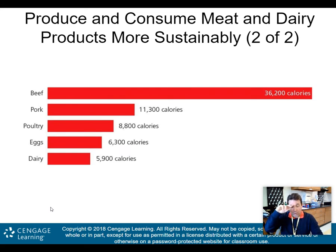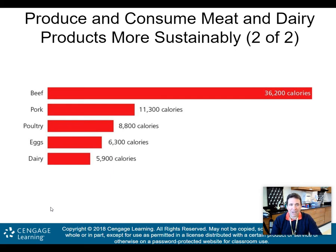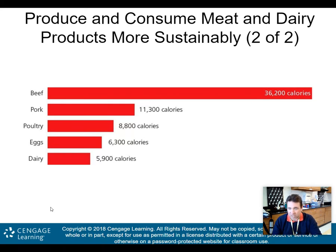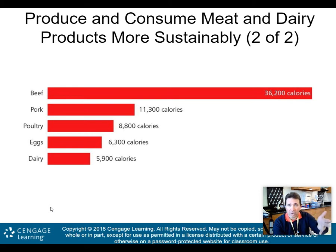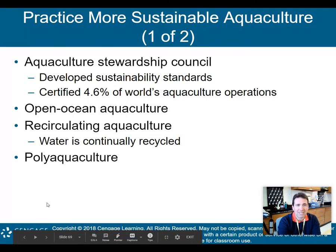This chart shows the amount of feed required to produce 1,000 calories of meat. Beef requires about 36,200 calories of feed to produce just 1,000 calories of meat — far more than pork at 11,000, poultry at 8,000, eggs at 6,000, and dairy just under 6,000. Beef is by far the most inefficient form of protein, which makes reducing beef consumption especially important for sustainability.